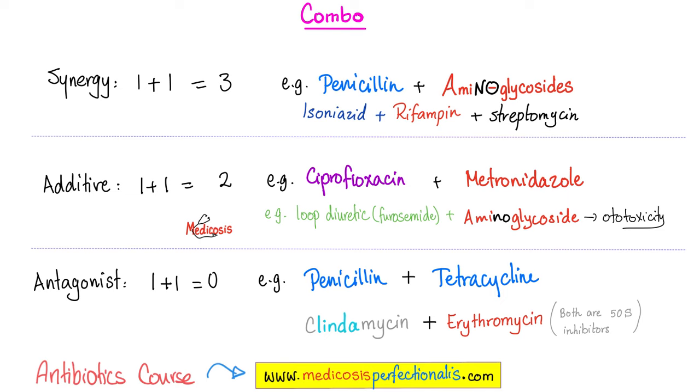Synergy, additive versus antagonist. What is synergism? One plus one equals three, which is a mathematical insanity but a pharmacological reality. That's why we give penicillin with aminoglycosides. That's why we give isoniazid, rifampin, and streptomycin for refractory tuberculosis. How about additive? One plus one equals two. And this could be a good thing or a bad thing. Ciprofloxacin plus metronidazole is a good combination. Loop diuretics and aminoglycosides is a horrible combination. This is ototoxic. Add them together, say goodbye to your ear. If I've ever heard that you gave a patient loop diuretics and an aminoglycoside, I will smack your gluteus minimus. What's an antagonist? One plus one equals zero. Combining penicillin and tetracycline together is stupid. By the same token, combining clindamycin and erythromycin is pointless.